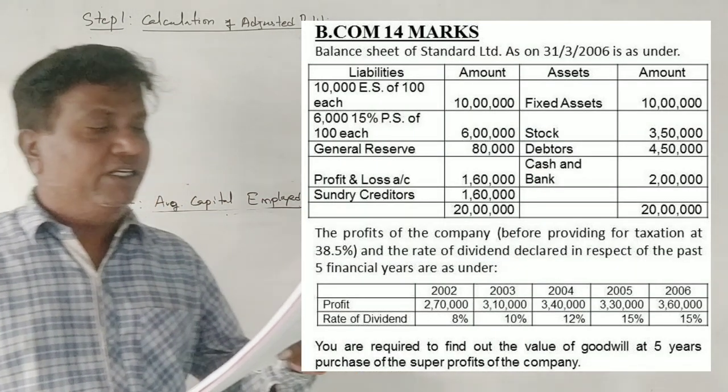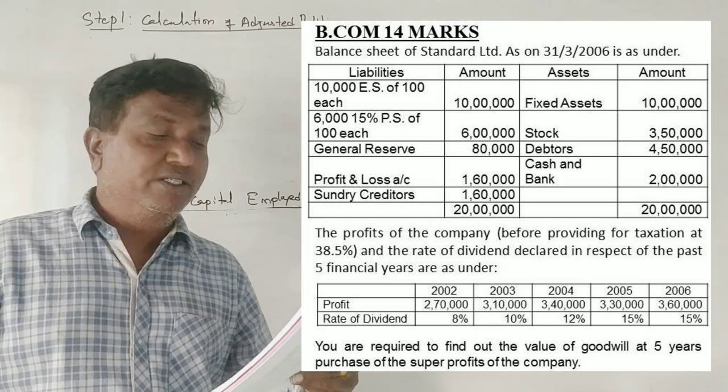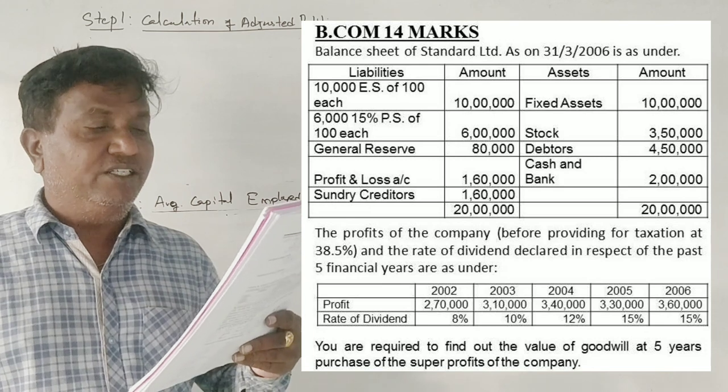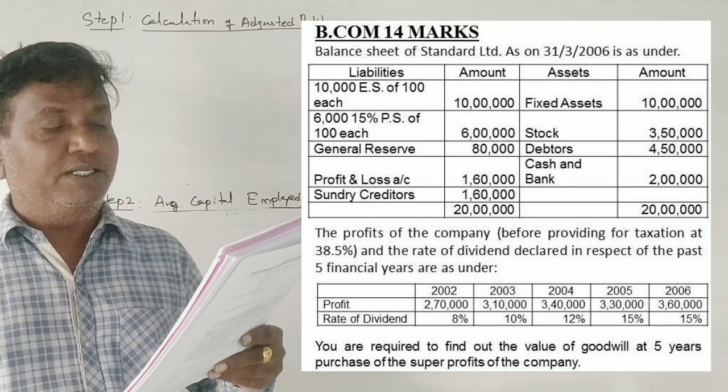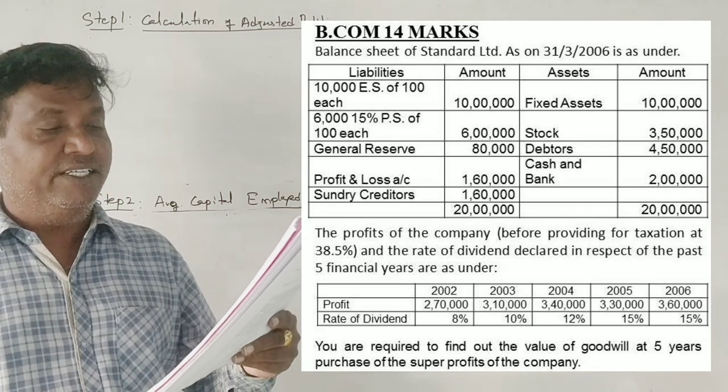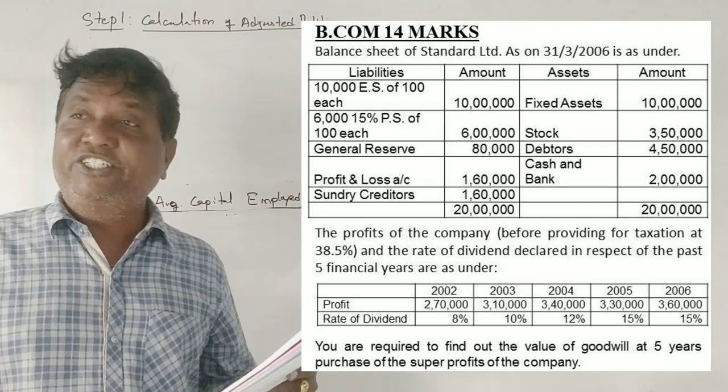Balance sheet of Standard Limited as on 31st March 2006 is as follows: 10,000 equity shares of rupees 100 each, 6,000 50% preference shares of rupees 100 each, general reserve, profit and loss account, sundry creditors, fixed assets, debtors, and cash at bank.